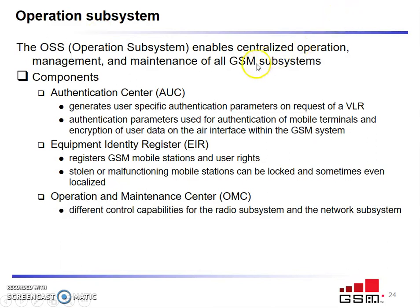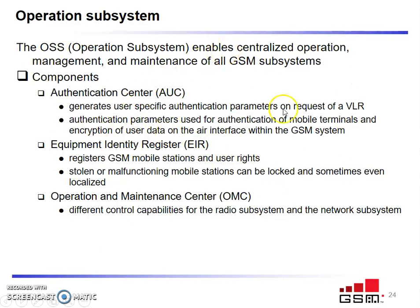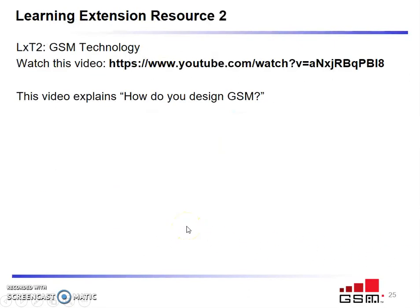The operation subsystem has functions like centralized operation, management and maintenance for GSM systems. Its components include the Authentication Center, Equipment Identity Register, and Operation and Maintenance Center. The Authentication Center helps in authenticating and identifying the user, and the Operation and Maintenance Center controls all capabilities of the radio subsystem and the network subsystem.